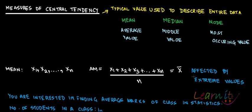Measures of central tendency are typically used to describe entire data. There's something called summary statistics — they summarize the entire data.